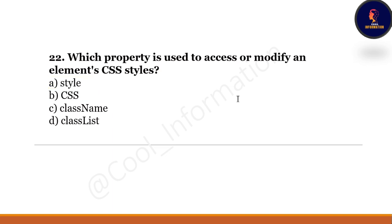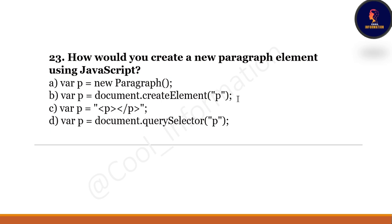Next question: Which property is used to access or modify an element's CSS style? Option A: style. Option B: css. Option C: className. Option D: classList. The style property is used to access or modify an element's CSS style.